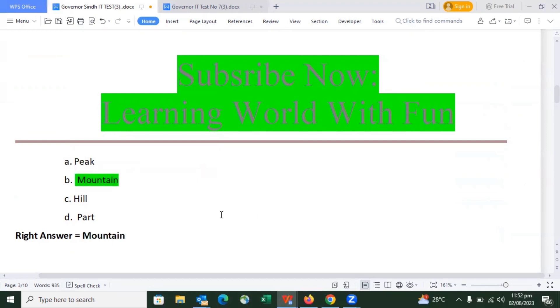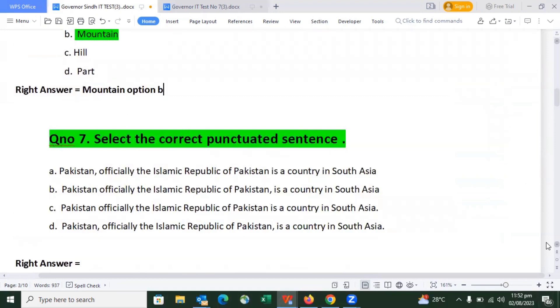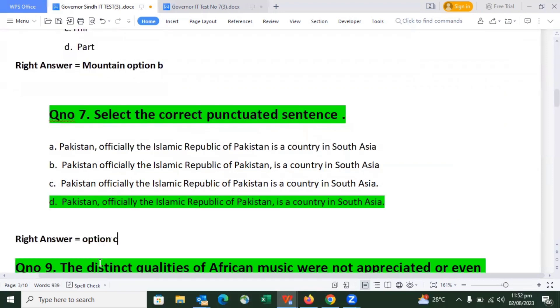The next question: Select the correct punctuated sentence. We have already mentioned that Pakistan is a country in South Asia. The right answer is option number 3.